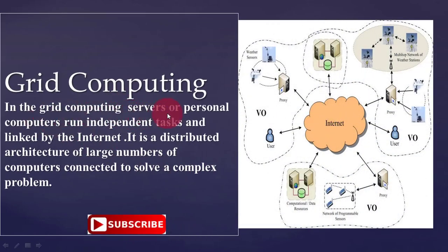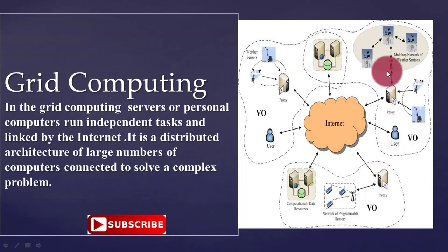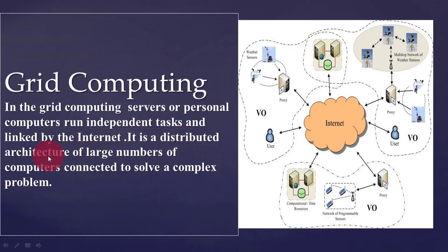Grid computing servers or personal computers run independent tasks and are linked by the internet. In this distributed architecture, a large number of computers or servers are connected and use a common resource pool. This common resource pool has huge storage, processors, etc. These computers work independently and act like a supercomputer because they share resources from the common resource pool. It is a distributed architecture of large numbers of computers connected to solve a complex problem.